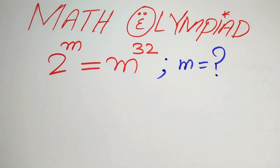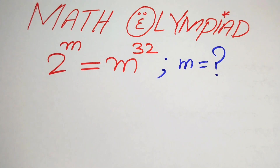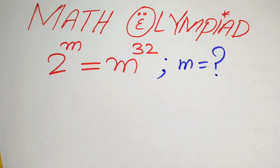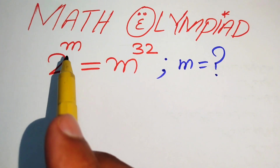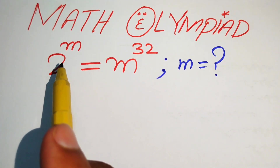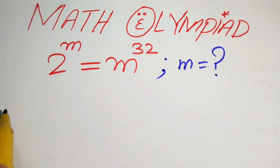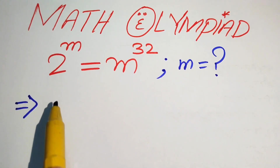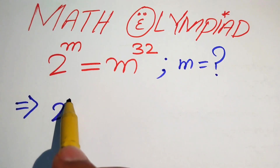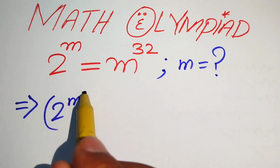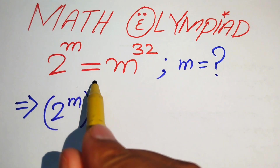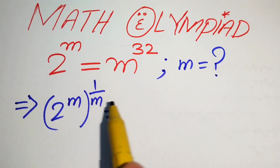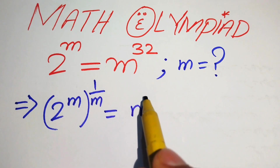The very first step is to eliminate m from the left hand side. In order to eliminate this m from the left hand side, we need to take the mth root on both sides. The meaning of mth root is that we take the exponent 1 over m on both sides.